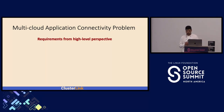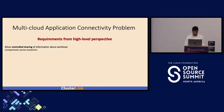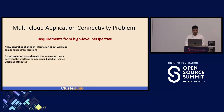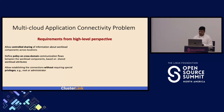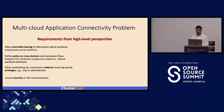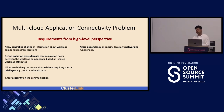Ideally, we would want to rethink the problem of multi-cloud application connectivity from a higher level. We present the requirements for an ideal solution from an application perspective. First is the ability to have controlled sharing of information about workload components or services across different locations or clusters. Second is to define the policy of cross-domain communication flows between workload components deployed across multiple clusters. Third is to allow connections to be established without requiring special privilege or administrator tickets. Fourth is to ensure security of the communication.